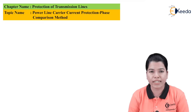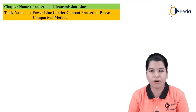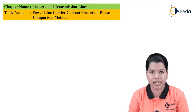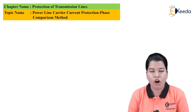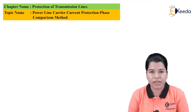Basically, while protecting the transmission line there are different zones of protection. When a particular transmission line section comes under a particular zone of protection, current transformers are provided at the incoming as well as outgoing terminals. Relays and circuit breakers are independently connected at the incoming terminal and at the outgoing terminal. It is desired that both circuit breakers at the incoming as well as outgoing terminals should operate simultaneously.